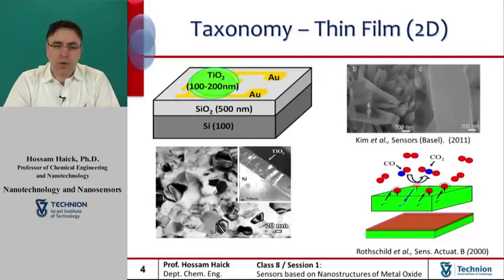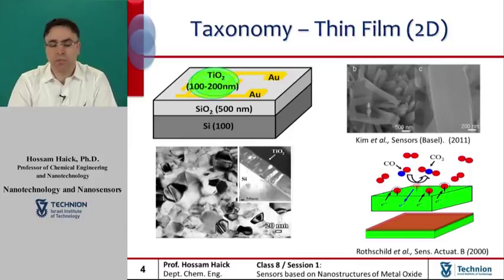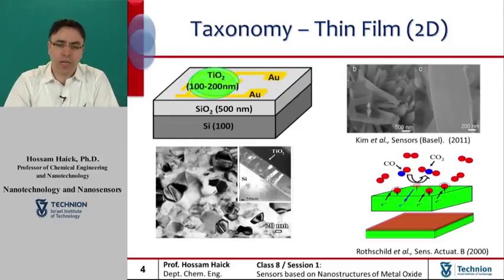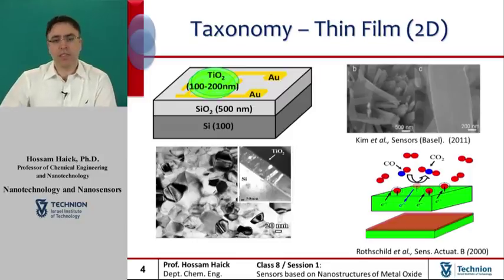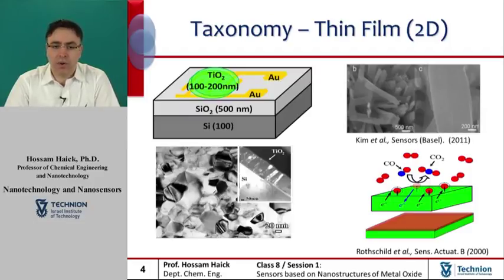The second generation of metal oxide gas sensors is the thin film gas sensors. These sensors are usually fabricated by chemical vapor deposition or physical vapor deposition, as we will describe later on. Many mechanisms are involved in the sensing process, and not all of them are completely understood yet. In the presented example on the screen, thin films of titanium dioxide with a thickness of around 100 to 200 nanometers are deposited at room temperature by RF reactive sputtering from a pure titanium source in an environment of argon and oxygen.